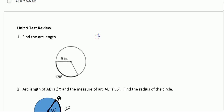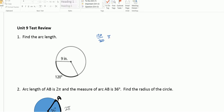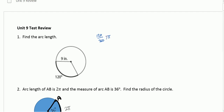The fraction is 120 over 360 times 2 pi r. And r is 9. So 2 pi r, or 2 pi times 9, is our circumference. And then 120 over 360 is the fraction of the circle we're working with, which can reduce to 1 third times 18 pi.